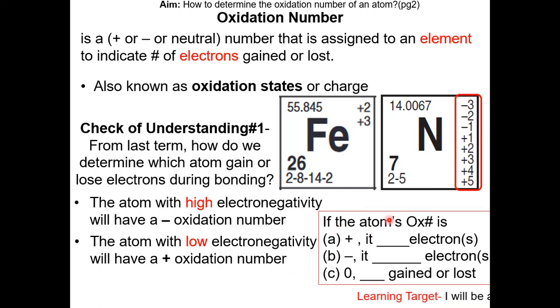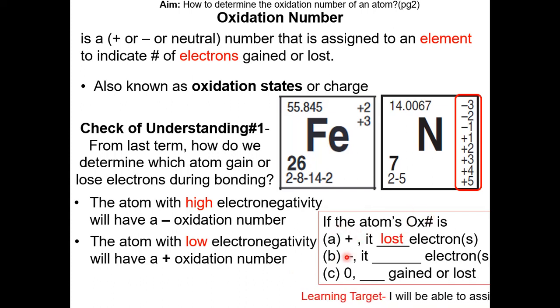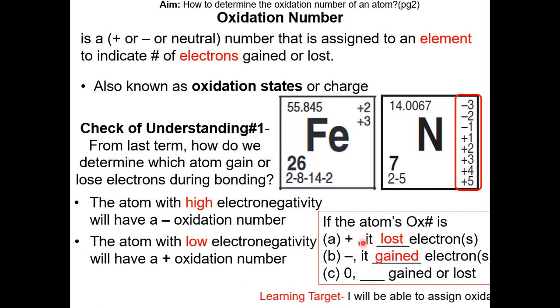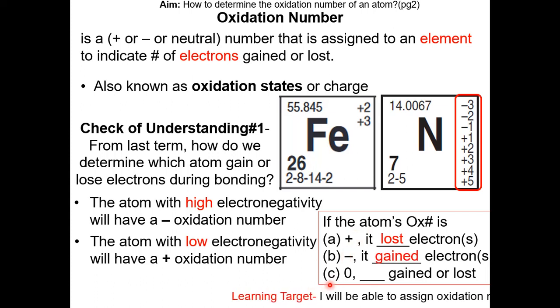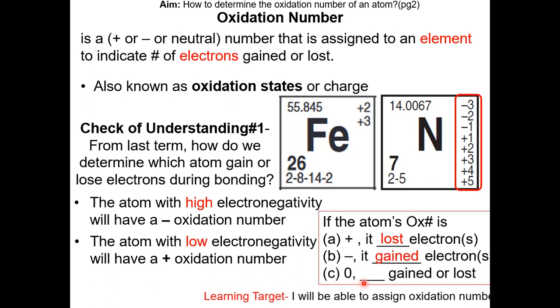So in summary: if the atom's oxidation number is positive, it has lost electrons. If its oxidation number is negative, it has gained electrons. And if the oxidation number is zero, it did not gain or lose electrons.